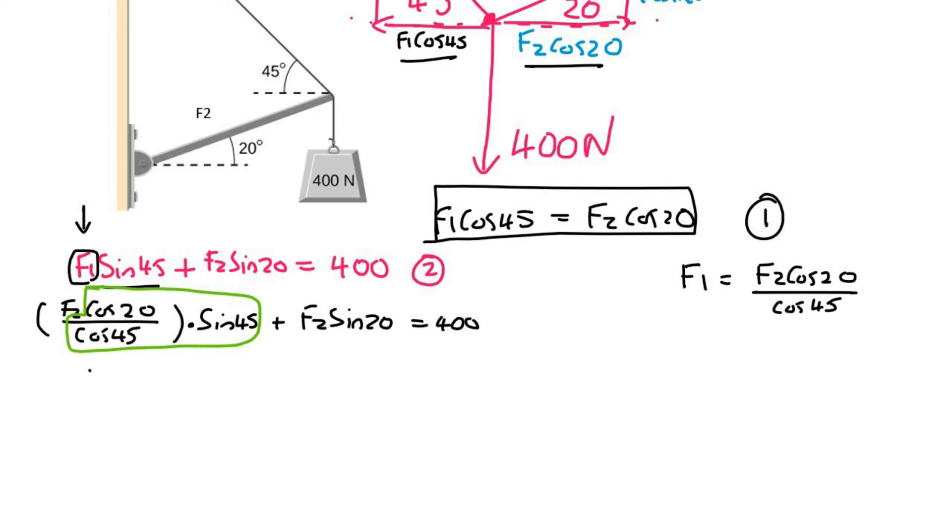So you can type in cos 20 multiplied by sin 45 divided by cos 45, and that's going to give you 0.9396, and then that F2 is still over there, so I'm going to put F2. Plus, now this, if you type in sin 20, that's also just a number. So type sin 20 on your calculator and it's going to give you 0.3420 F2 equals 400. Now you can just add these two together, so it will be 0.9396 plus 0.3420, which gives you 1.2816 F2 equals 400.